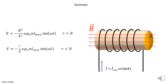So this is the summary of the whole problem. For r bigger than R (outside), the electric field goes like 1/r — it gets weaker with distance as 1/r. When r is less than R (inside), the electric field increases linearly with r.